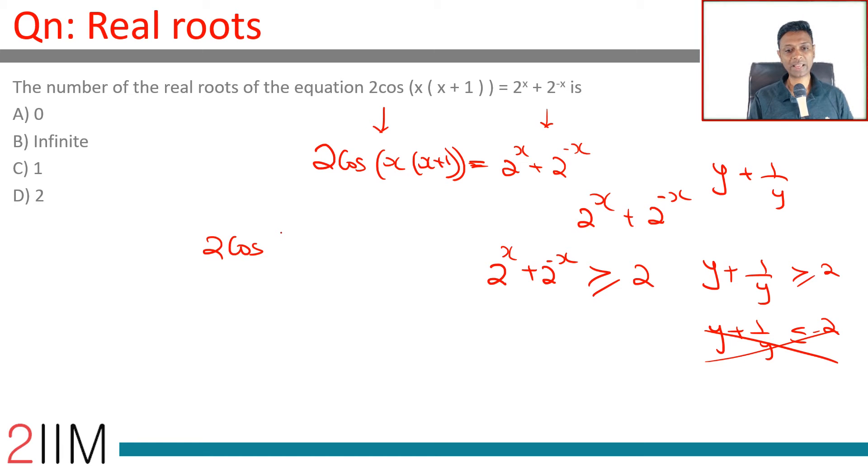Now, 2 cos anything is less than or equal to 2. Cos of something is less than or equal to 1. 2 cos anything is less than or equal to 2. Wonderful.